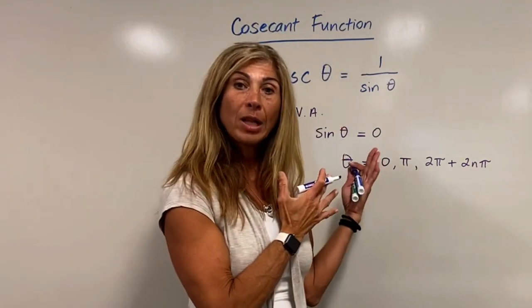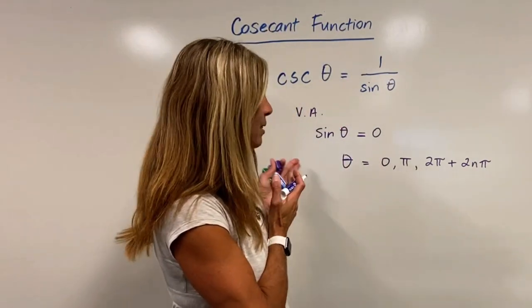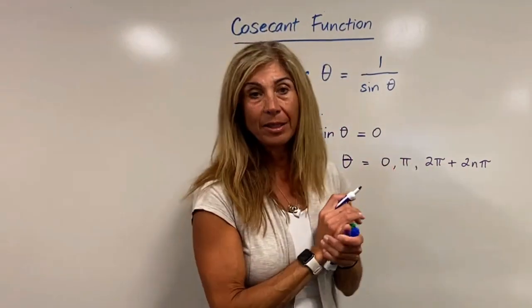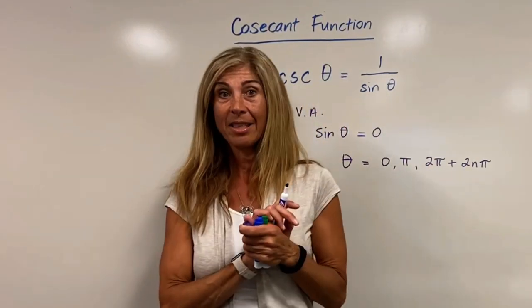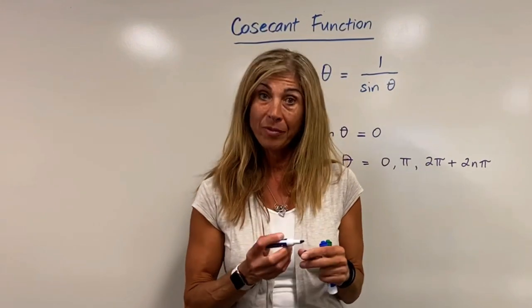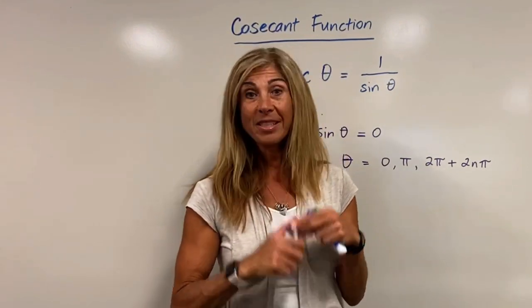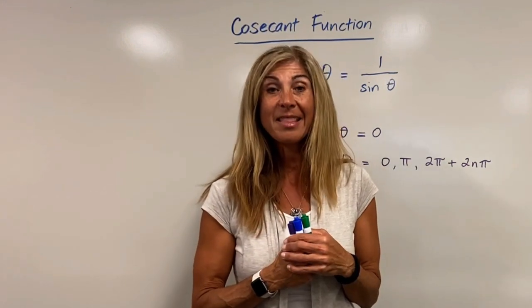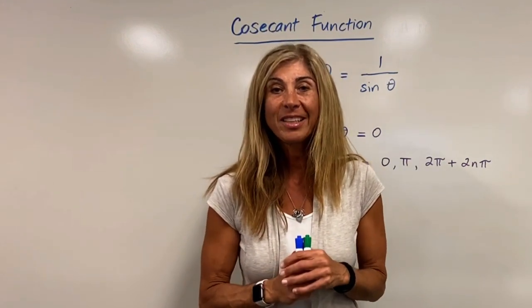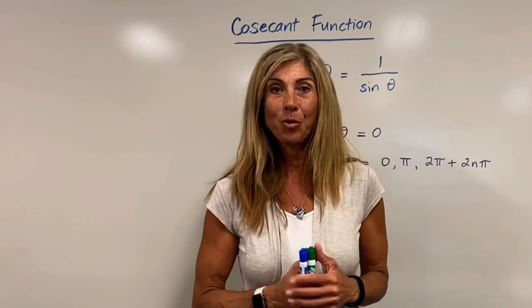We have our vertical asymptotes now occurring at these theta values. Think about that in relation to our secant theta function, which we looked at in a previous video. I hope this has helped. This is the end of our reciprocal function series. Thank you for watching. Please click on the Advantage logo to like and subscribe.